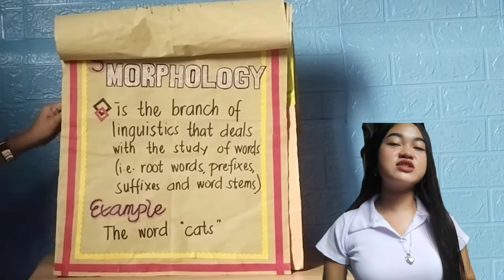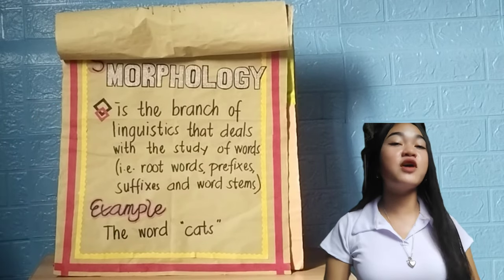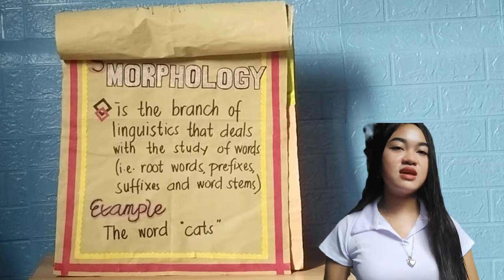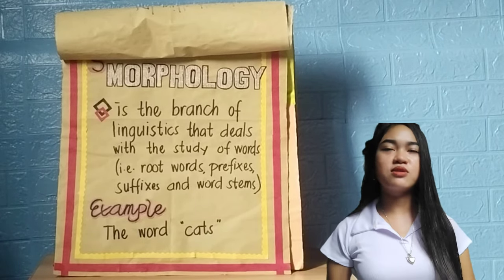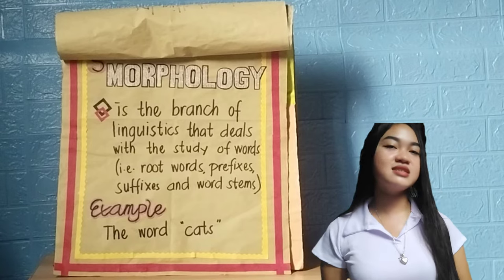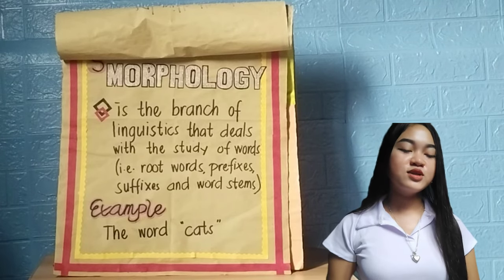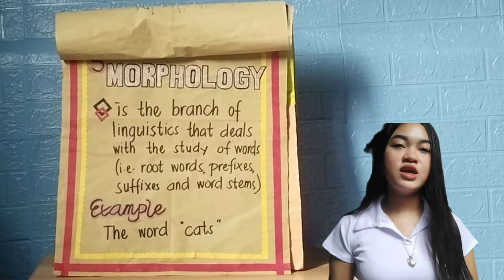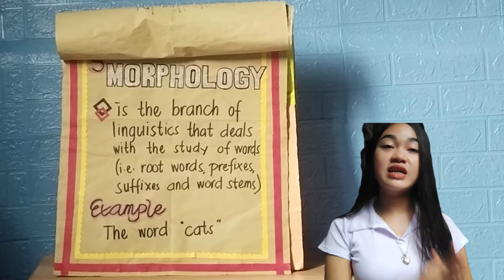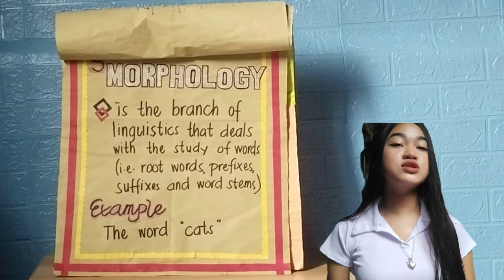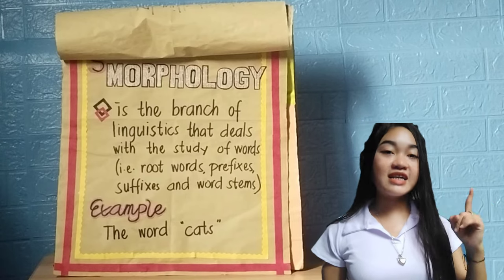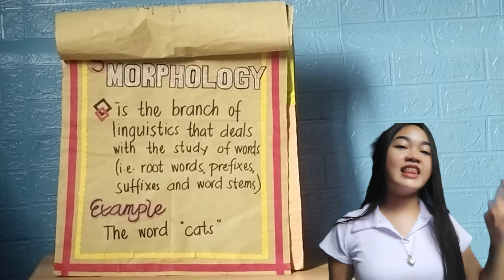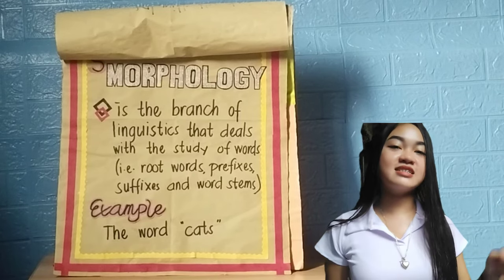The second-to-last structural branch is morphology. Morphology is the branch of linguistics that deals with the study of words — examples include root words, prefixes, suffixes, and word stems. Morphology is the study of the formation of words. For example, the word 'cats' is made up of two parts: 'cat,' which refers to a particular type of four-legged animal, and the 's,' which indicates there is more than one such animal.